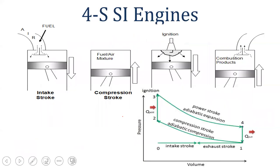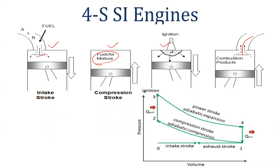Now let's look at the diagram. Air-fuel mixture enters during the intake stroke. During compression, the air-fuel mixture is compressed and the piston moves upward. After compression, sparking occurs at TDC, then the power stroke pushes the piston down, followed by exhaust. In the second and third strokes, both valves are closed. In the first stroke, the inlet valve is open; in the fourth stroke, the exhaust valve is open.